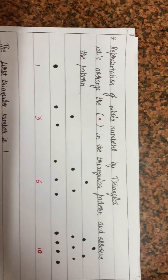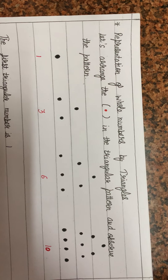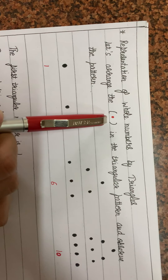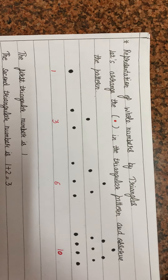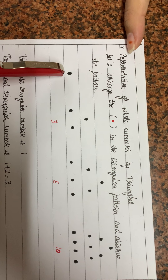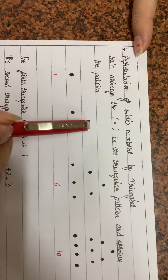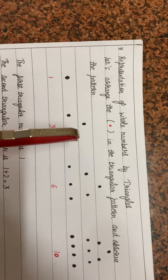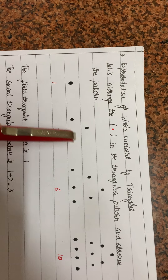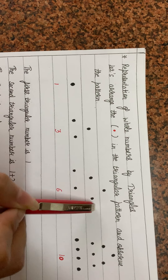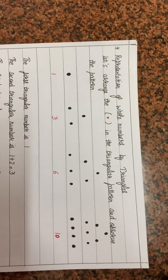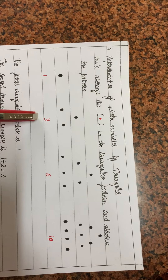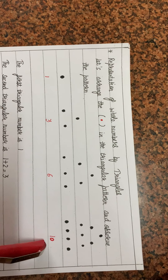Now let's understand some more patterns. The first is the representation of whole numbers by triangles. We arrange dots in a triangular pattern and observe the pattern. Starting with one dot, then three dots form a triangle, then six dots form a bigger triangle, then ten dots. So the numbers 1, 3, 6, 10 are made from triangles.